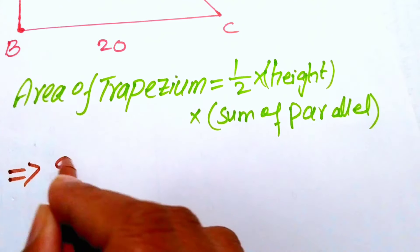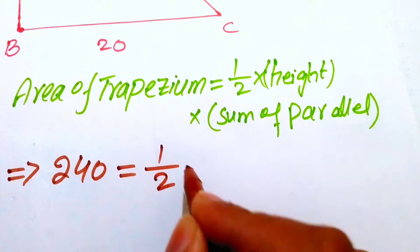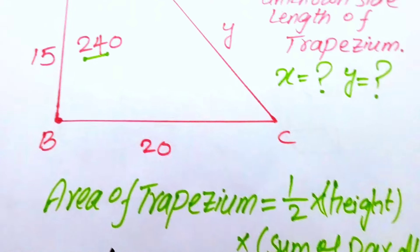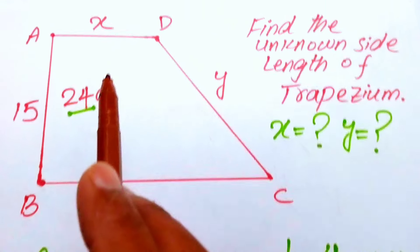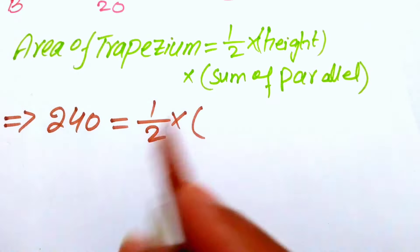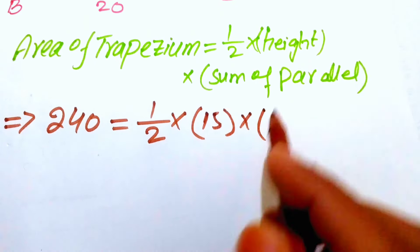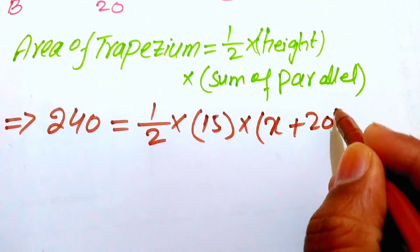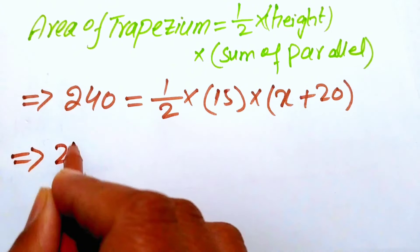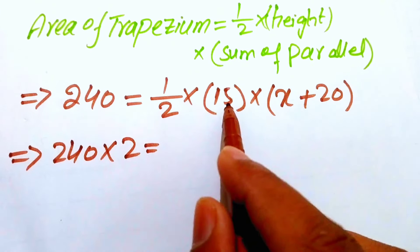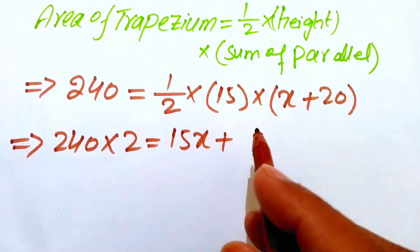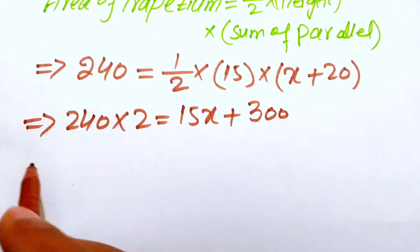Setting up the equation: 240 equals one-half times the height. The height of this trapezoid is 15 meters, and the sum of the parallel sides is x plus 20. So we write: 240 = (1/2) × 15 × (x + 20). Moving the 2 to the left side gives 480 = 15(x + 20), which expands to 15x + 300.